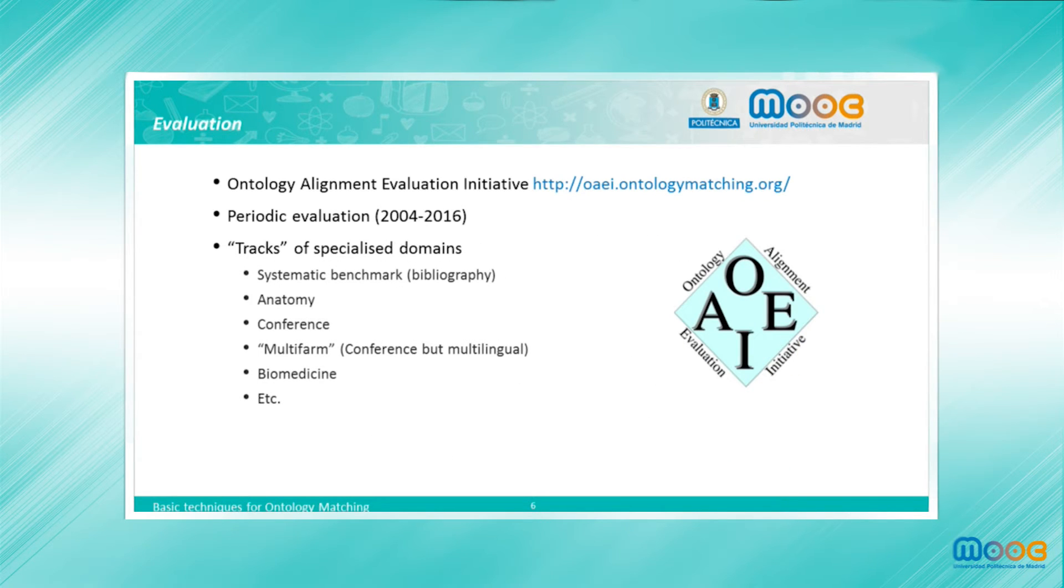Finally, it's important also for ontology matching the evaluation of the systems developed for ontology matching. It is worth mentioning the Ontology Alignment Evaluation Initiative as an initiative that periodically opens calls for participation in order to compare different ontology matching systems and in order to detect the main strengths and weaknesses of such systems in certain contexts or applying certain techniques.